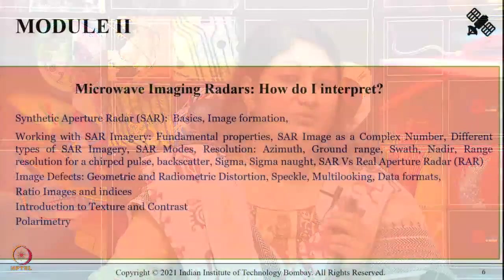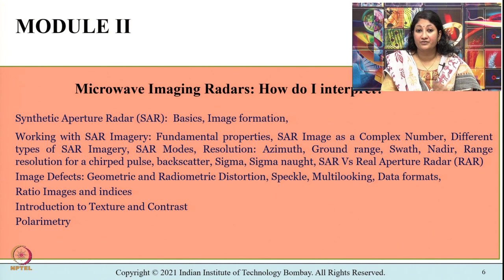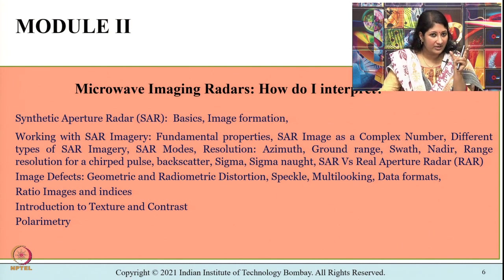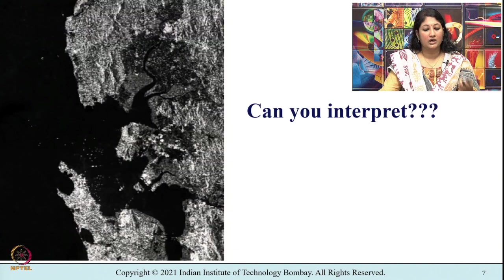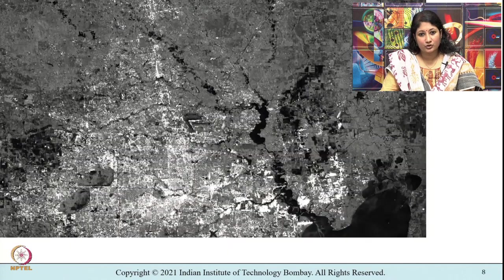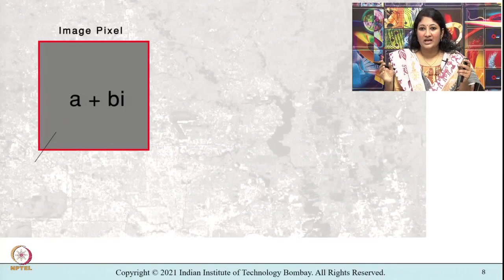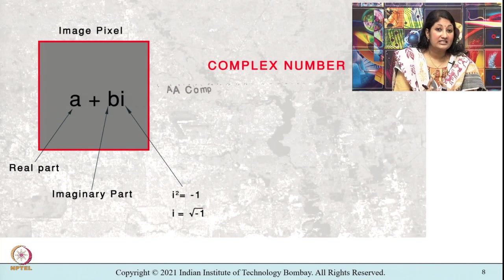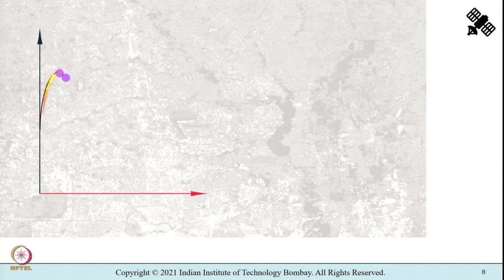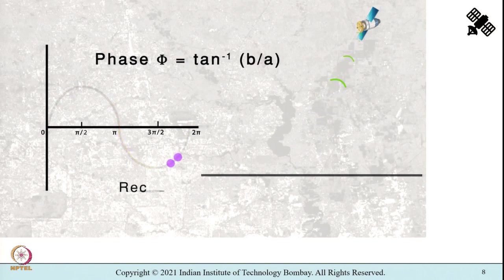The second module shall try to answer the question: microwave imaging radars — how do I interpret? We shall learn about active microwave systems of synthetic aperture radar, abbreviated as SAR. If shown a SAR image, interpretation is rarely simple — this particular image is of the Mumbai region. Through this module we shall learn about the fundamental properties of SAR imagery, the different types of SAR imagery, and terminologies like azimuth, ground range, swathe, and nadir. We shall also get introduced to speckle, which is a salt-and-pepper noise inherent in SAR imagery.